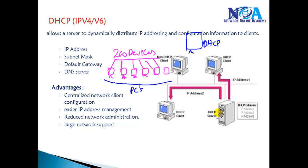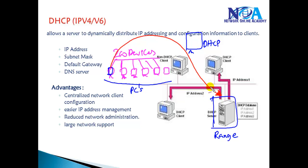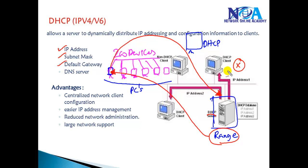We can configure a DHCP server and define a range of IP addresses on it. Whenever a client boots, it sends a request to the DHCP server saying it needs an IP address, and the server assigns one from that range. Not only the IP address — we can also define the subnet mask, the default gateway router, DNS information, and other additional parameters.